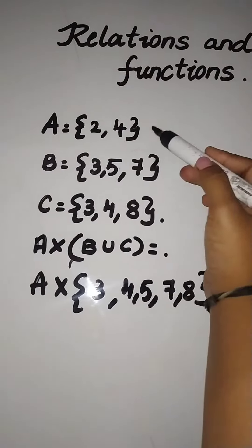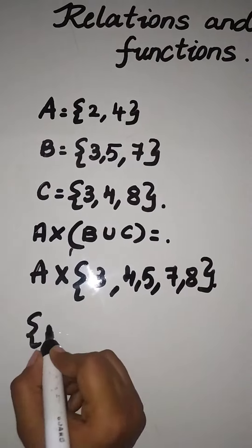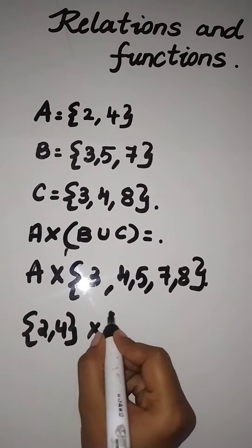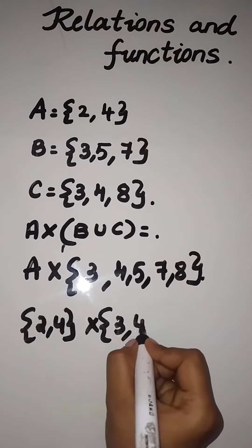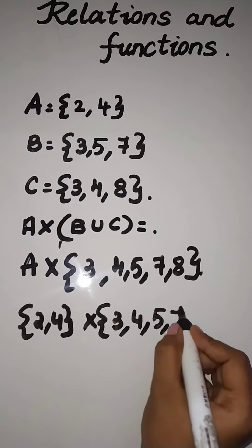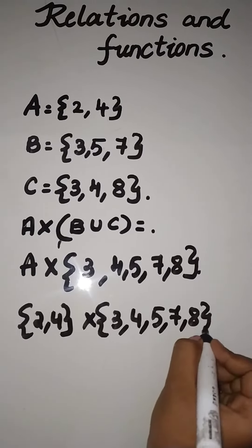will be multiplied with 2, 4. So hence 2, 4 into 3, 4, 5, 7, 8.